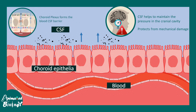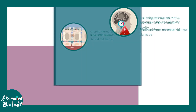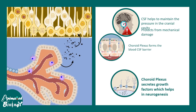The choroid plexus also forms the blood-CSF barrier, preventing any harmful substances from entering the brain from the blood. Apart from these functions, the choroid plexus can also secrete important growth factors that could drive the differentiation of stem cells in the brain — in short, the choroid plexus secretes growth factors that help in the neurogenesis program.